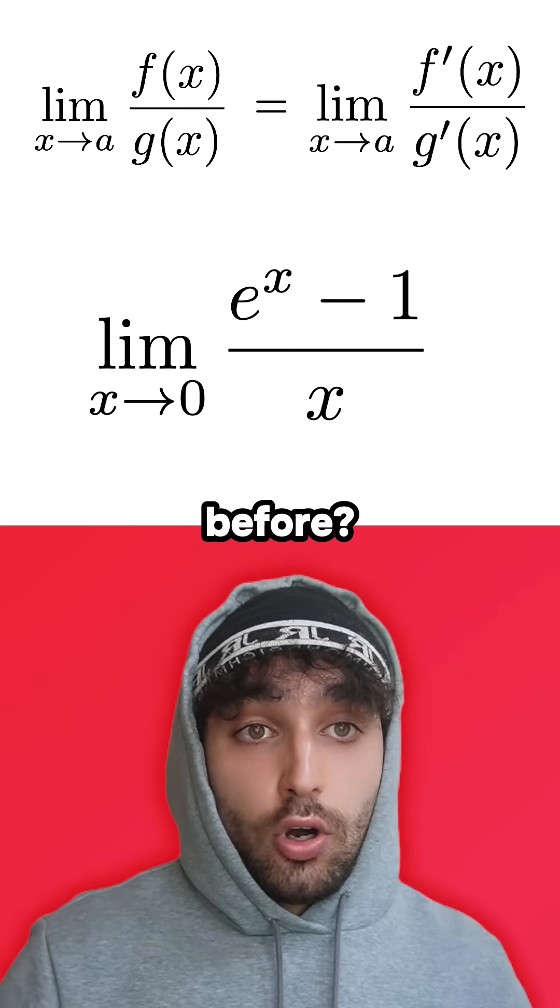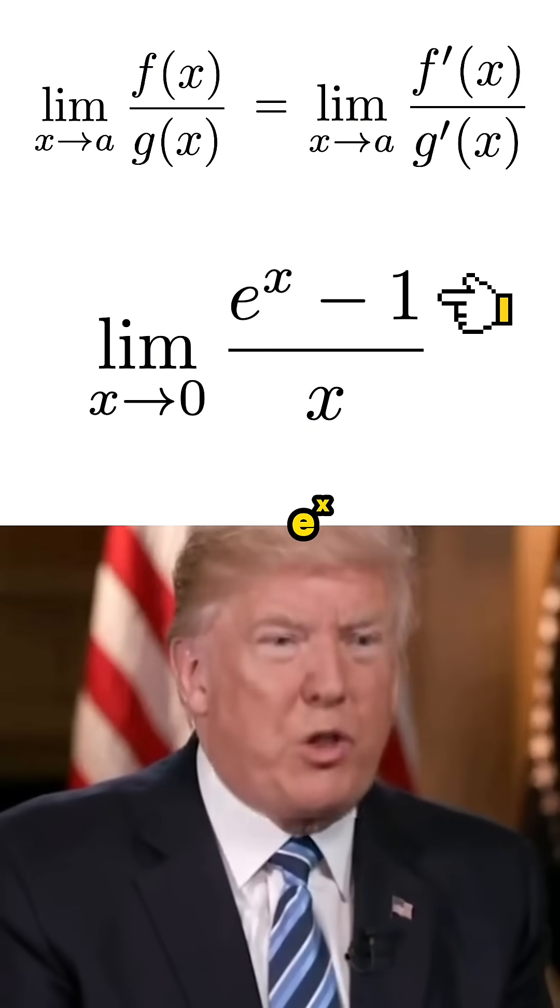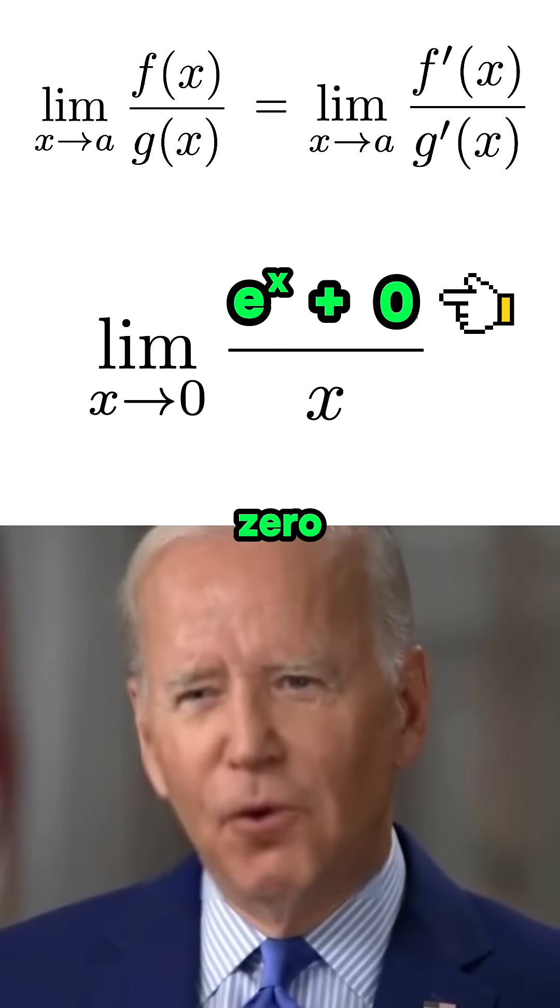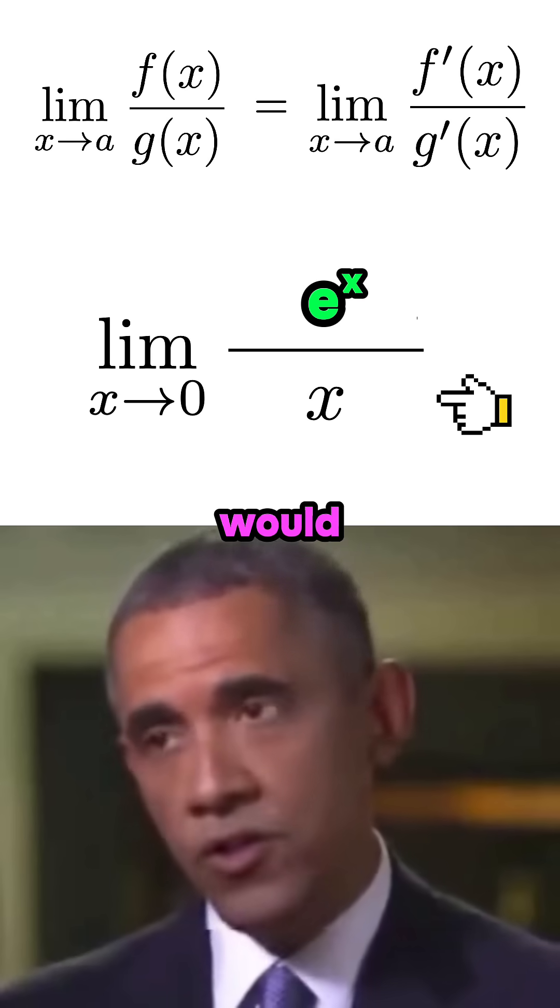Yo, let's do it for that question from before. Okay, so for the top, e to the x's derivative is still e to the x. And minus 1 is just a constant, so its derivative is 0. And for the bottom, the derivative would just be 1.